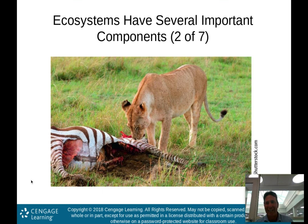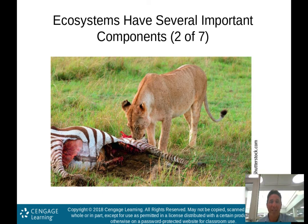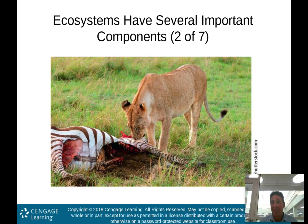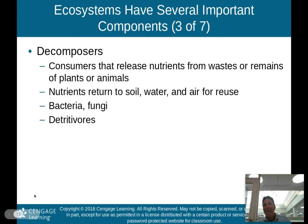Looking at a picture from the African plains: I would call the lion a secondary or tertiary consumer eating the zebra, which is the primary consumer. The zebra eats the grass, and then the lion eats the zebra. That's pretty much how it goes.